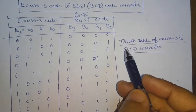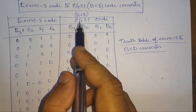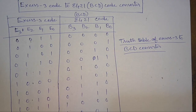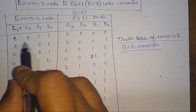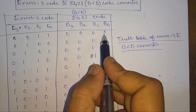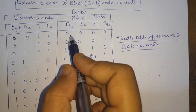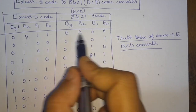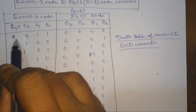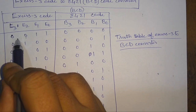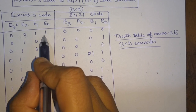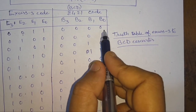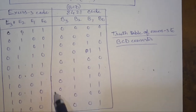This is the truth table of XS3 code to BCD code conversion. This is the XS3 code and this is the BCD code. We will subtract 3 from the XS3 value — so 0011, which means 3 — and for BCD code we will have 0000, and so on.